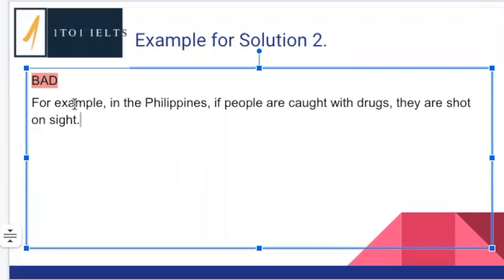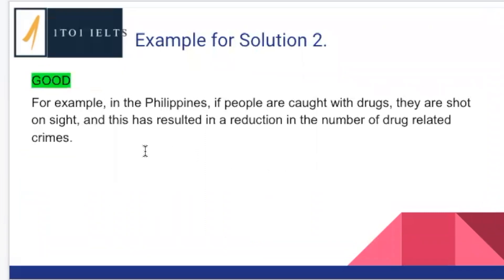To make this a good example, we need to add this second part. The same example with the result added: 'For example, in the Philippines, if people are caught with drugs, they are shot on site — and this has resulted in a reduction in the number of drug-related crimes.' We see very strict punishments, and the result is less crime. That was our main idea, that was our solution, and now we have an example that actually supports it. Hopefully you can see how these solutions are now supported by providing specific ideas and also providing a result.